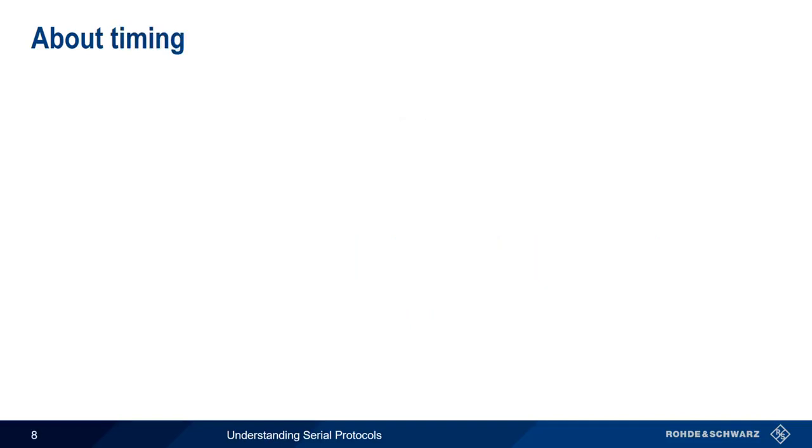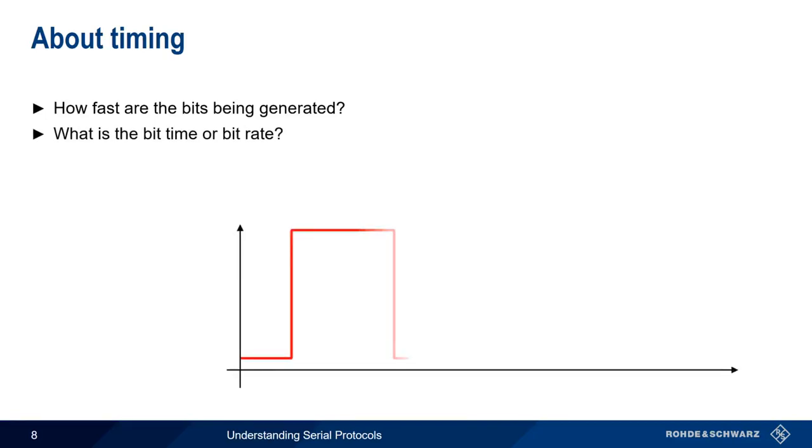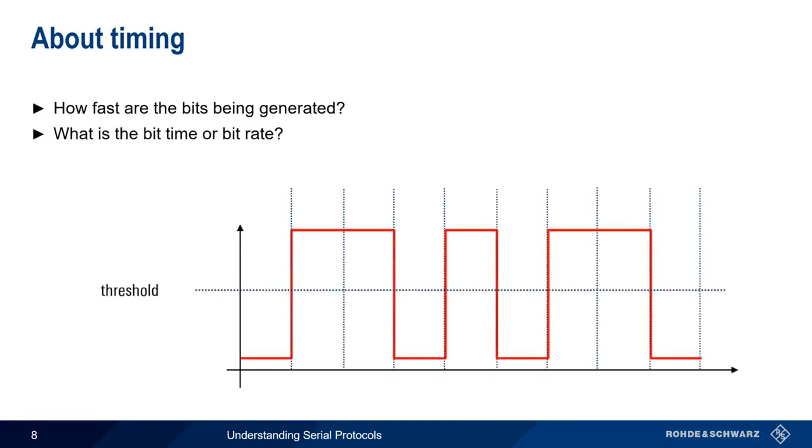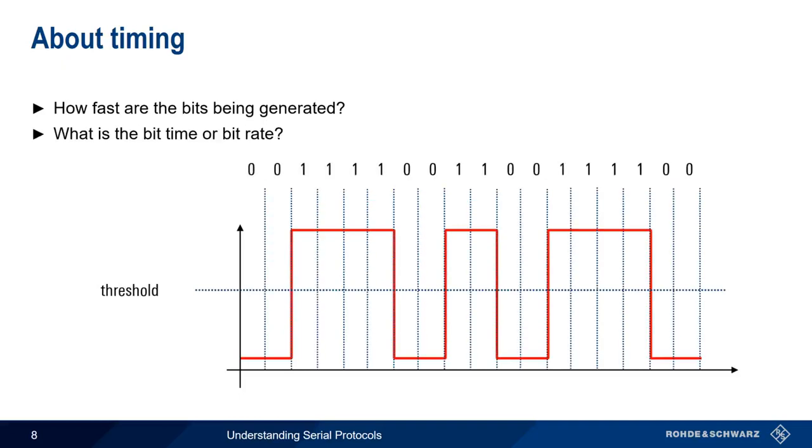Defining the zero and one voltage levels is not enough to determine what bits we're receiving. We also have to know how fast the bits are being generated. In other words, what is the bit rate or bit time? Consider these bits. Are they these values, or are they these values? It depends on the configured bit rate. In order to decode serial data, we clearly need to make sure that our receiver or instrument is using the same bit rate as the transmitter.